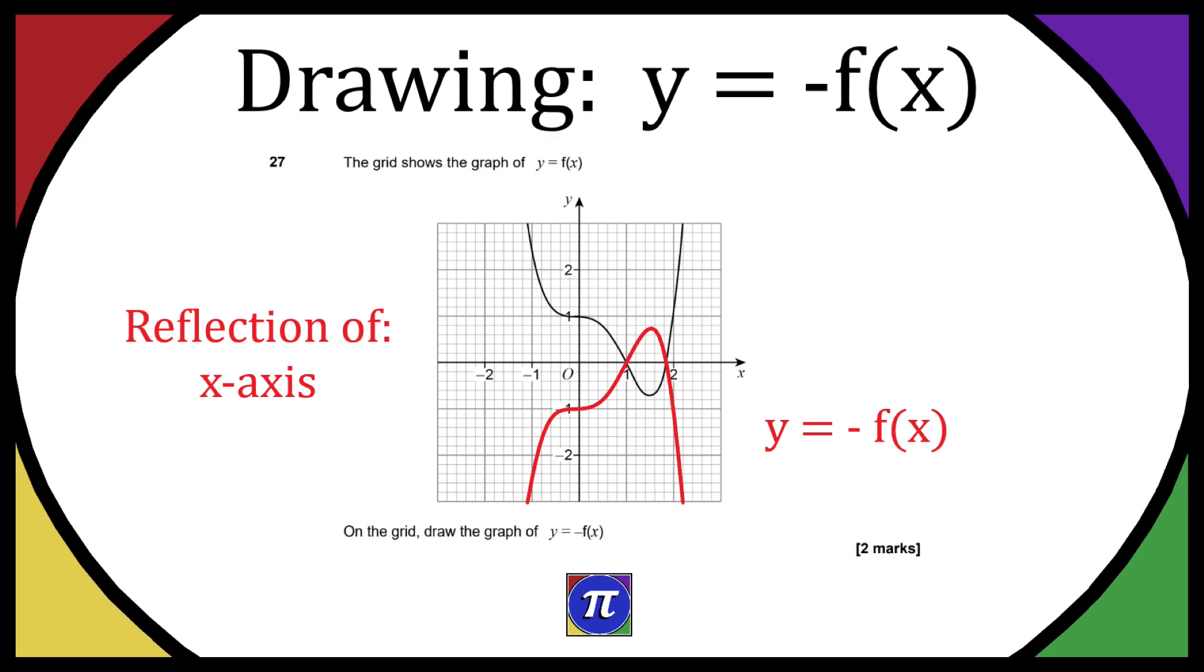Now again if it doesn't make sense what we're doing is we're taking the values as we normally would for y equals f of x and we're just making them negative for y. So all the y values are going to be the same but negative. That's why we effectively have this flip on the x-axis. Hopefully that makes sense.